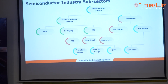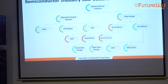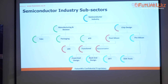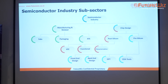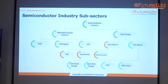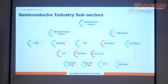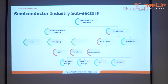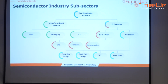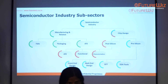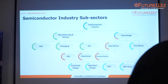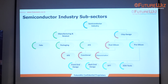This is the major industry sub-sectors that we have divided into two things: manufacturing and related, and chip design — normally calling it as fab and fabless. In manufacturing we have three things: fabs, packaging, and ATE, that is testing equipment.